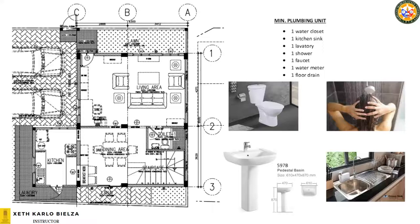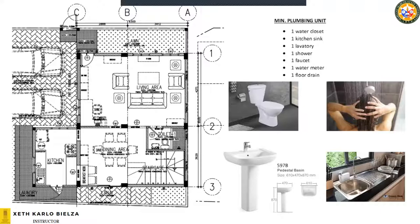We start our design and plumbing layout with the architectural floor plan. The architectural floor plan serves as our base plan for the design and for the fixtures that will be installed. In a simple residential project, we must always keep in mind the sixth principle — the basic plumbing unit.